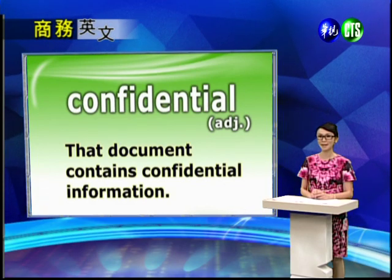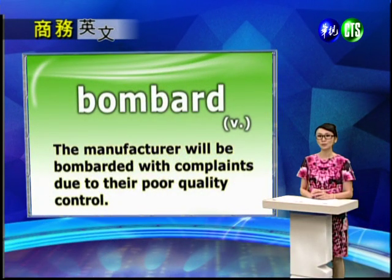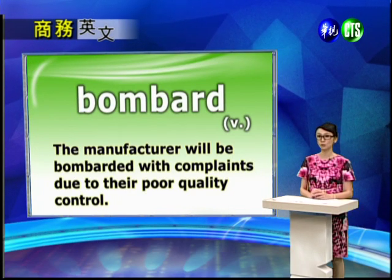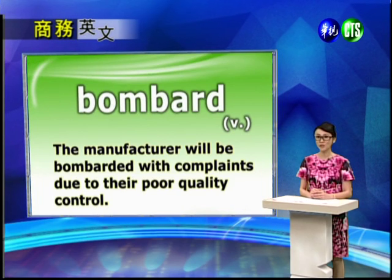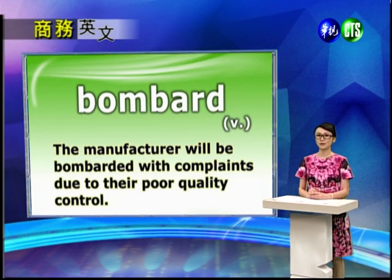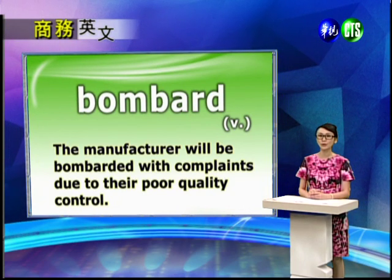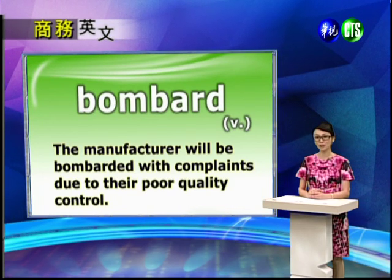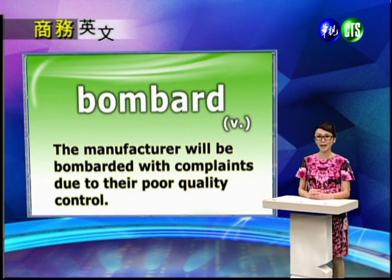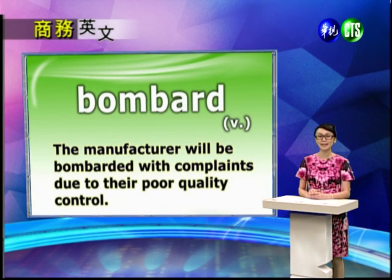我们来看一下下一个单字：Bombard. The manufacturer will be bombarded with complaints due to their poor quality control. Bombard 有轰炸的意思，就是连续不断地攻击。Manufacturer 这里指的是制造商。这句话意思是说，制造商将会收到连续不断的埋怨。为什么呢？Due to 是由于——由于他们的 poor quality control，poor 是很糟糕的，quality control 就是品质控管。